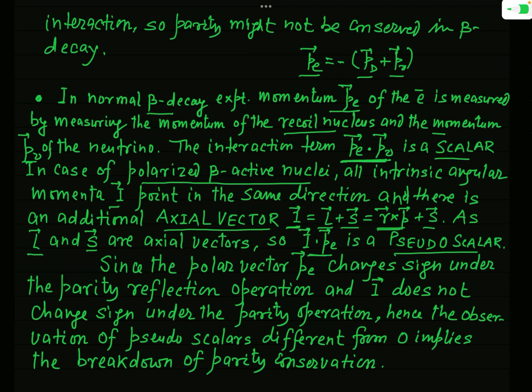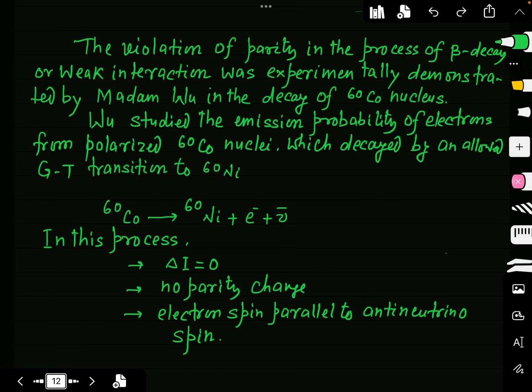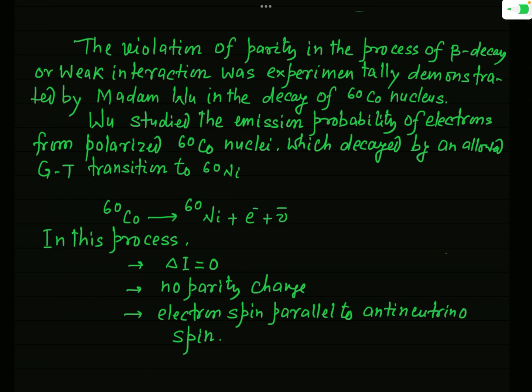When the parity reflection operation is performed, the polar vector p_e changes sign, but the total angular momentum vector I — the spin of the nucleus — does not change sign under the parity operation. The observation of pseudo-scalars different from zero therefore implies a definite violation of parity conservation, or the breakdown of parity conservation.